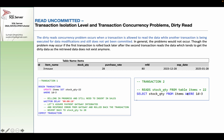The data that transaction 1 updates will be read by transaction 2. In the Read Committed isolation level, a lock is placed on the reading. The second transaction selects stock quantity from items where ID equals 3, and gets 22.